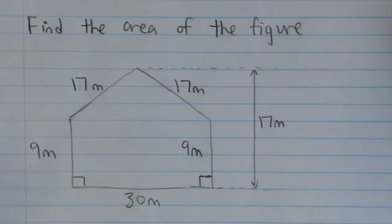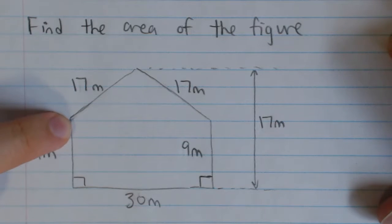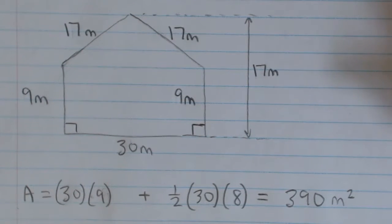Remember, it's base times height, or length times width, whatever you want to call it. So here's the base, 30 meters, and the height is 9 meters. And so for our area, we have 30 multiplied by 9.